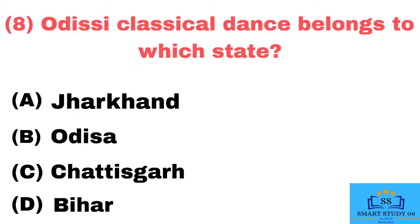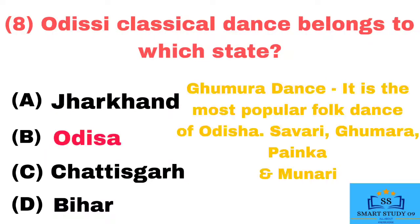Q8. Odissi classical dance belongs to which state? Answer: Odisha. Bhumura dance is the most popular folk dance of Odisha. Other dances include Sawari, Bhumara, Penka, and Munari.